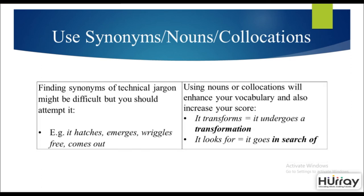You could also use synonyms, nouns, and collocations. This helps include words related to a particular field. For example, instead of a simple phrase, you could use 'it hatches,' 'emerges,' 'wriggles free,' or 'comes out.' Using just one or two precise words to describe an action will score more in your lexical resource. Use nouns and collocations as well — for example, instead of 'it transforms,' say 'it undergoes a transformation.' Instead of 'it looks for,' use 'it goes in search of' — where 'in search of' is your collocation.